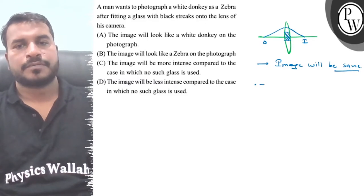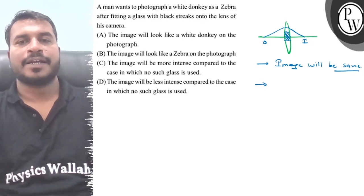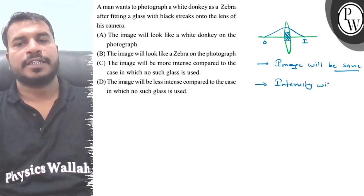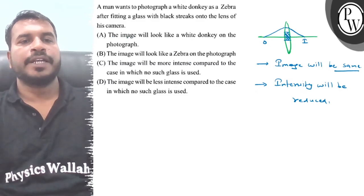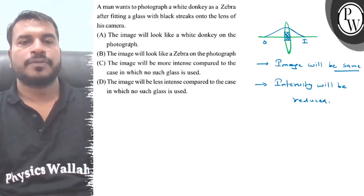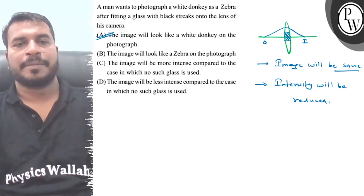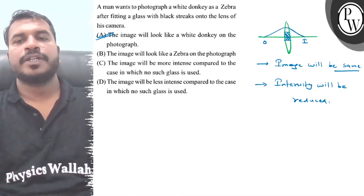Now we have covered some parts, so light intensity will be reduced. The white image will look like a white photograph — the image will be less intense compared to the case where no such glass is used. So the correct answer is the intensity option.